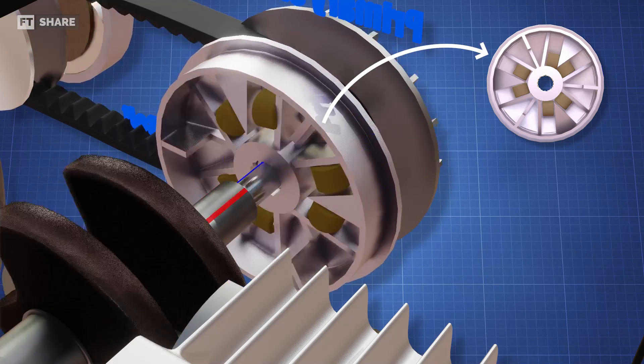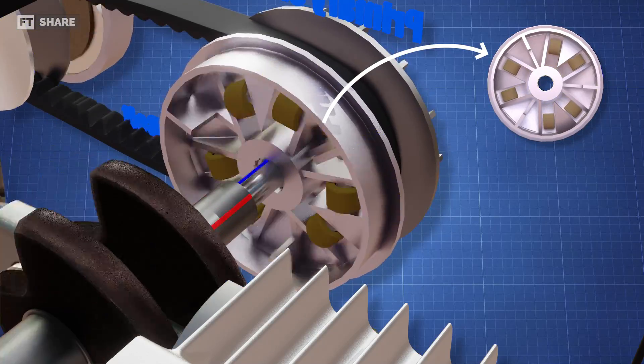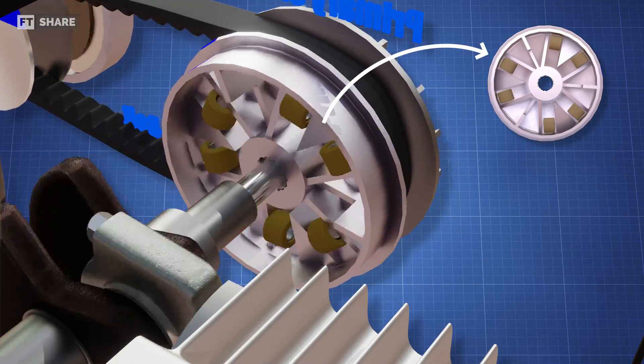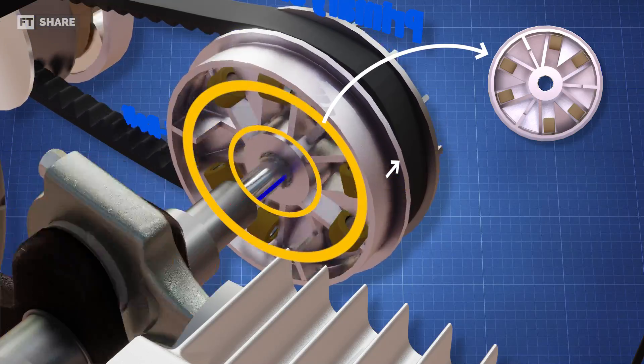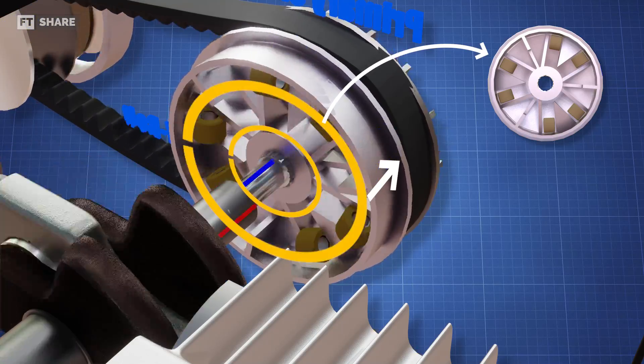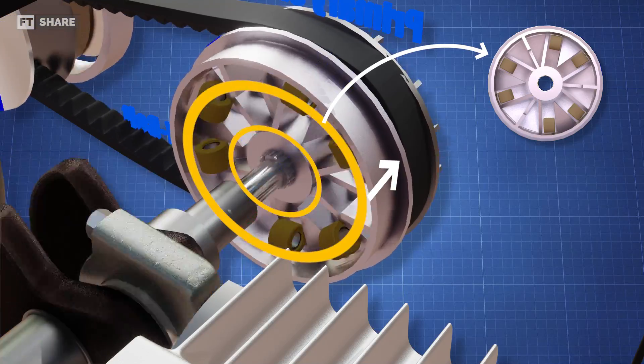As the engine speeds up, centrifugal force causes the rollers to move outward along the curved surface. These rollers will work to push the primary pulley as the cam plate holds its position, forcing the pulley to move toward the fixed pulley.